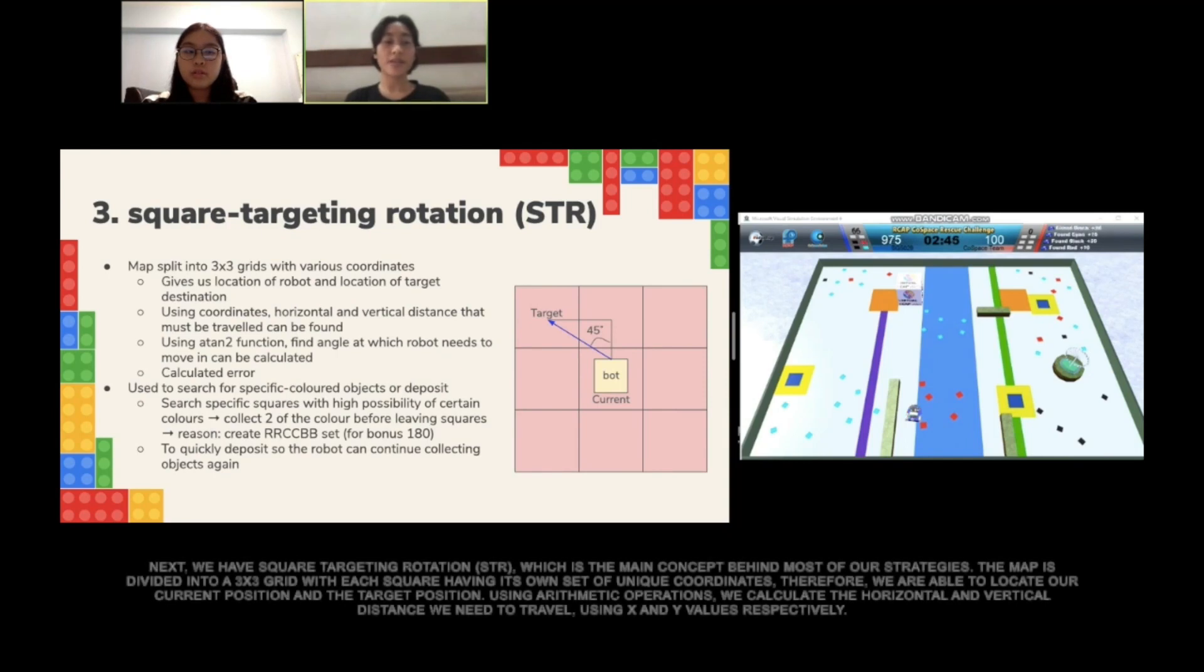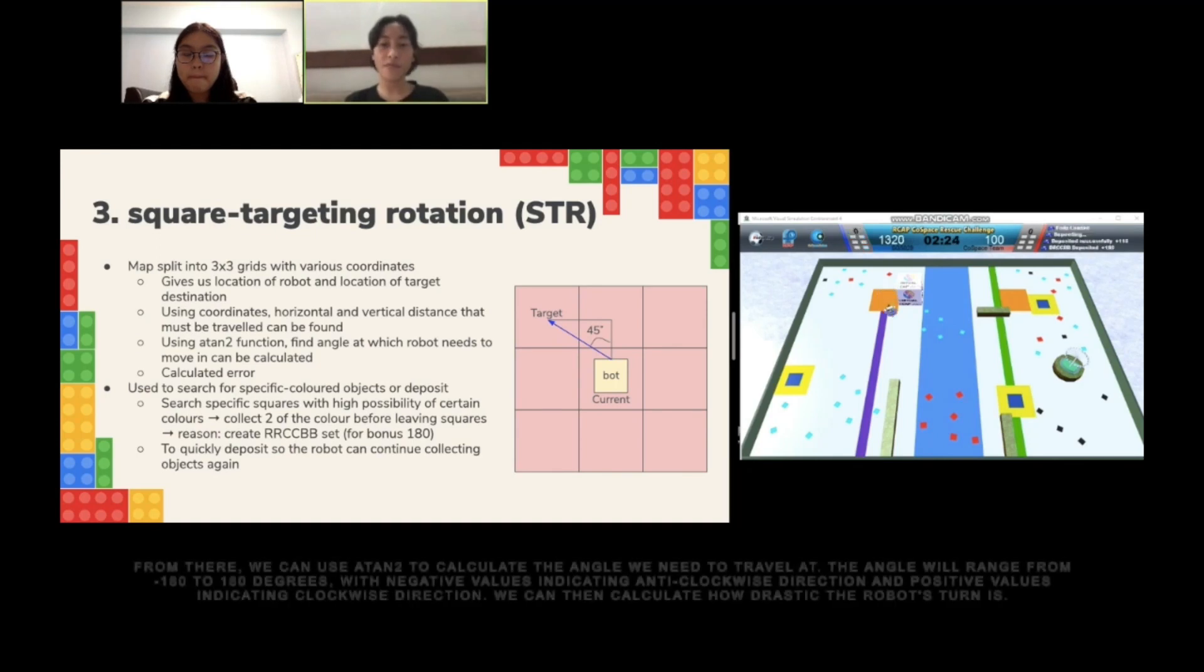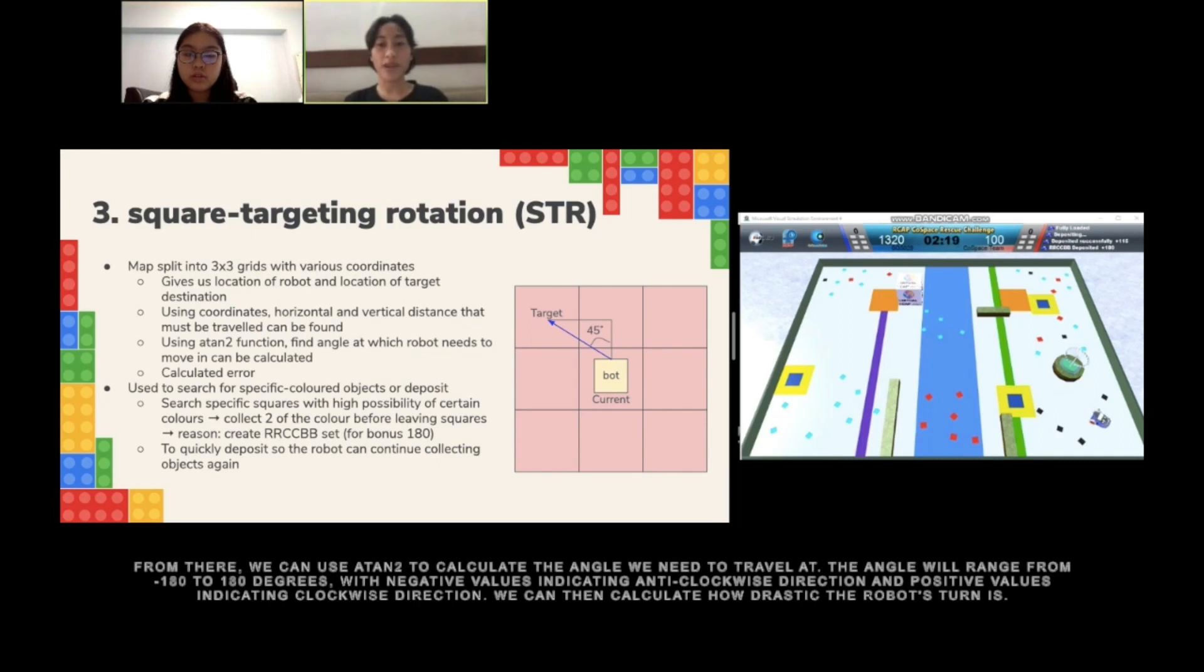Next, we have square targeting rotation, or STR for short, which is the main concept behind most of our strategies. The map is divided into a 3x3 grid, with each square having its own set of coordinates. Therefore, we are able to locate our current position and the target position. Using arithmetic operations, we calculate the horizontal and vertical distance we need to travel using the x and y values respectively. From there, we can use atan2 to calculate the angle we need to travel at. The angle will range from minus 180 to 180 degrees, with negative values indicating counter-clockwise direction and positive values indicating clockwise direction. We can then calculate how drastically the robot needs to turn.